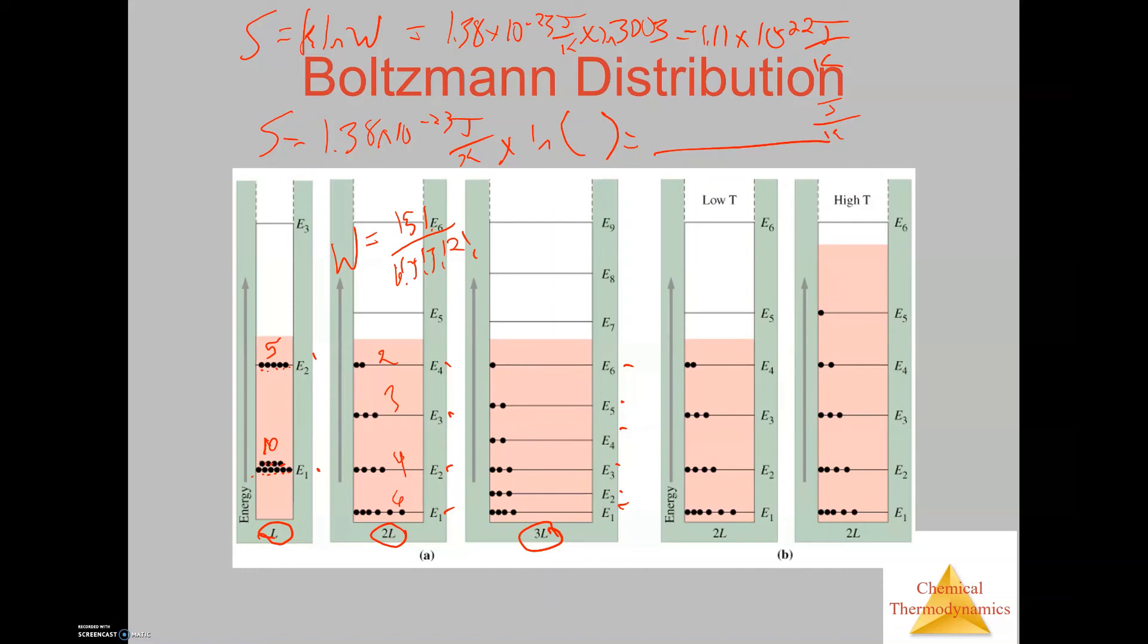If we jump over to the right side of this page, we see that we have 2L and 2L, both have the same volume, but what's different here is one is at low temperature and one is at high temperature. You can see as the temperature goes up to the high temperature, the more energy levels, again the more microstates, and the higher the entropy is going to be. So microstates is an important detail in relation to what we're talking about in reference to entropy and how much entropy a system might possess.